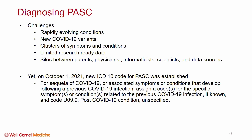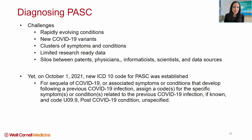Post-acute COVID is very dependent on variants, and new variants continue to emerge. It's a cluster of symptoms and conditions, and diagnostic uncertainty when there are expressions of disease that are not measurable can be very, very challenging. There's limited research-ready data, and there are silos between patients, physicians, informaticists, scientists, and data sources. I would layer on this two other things.